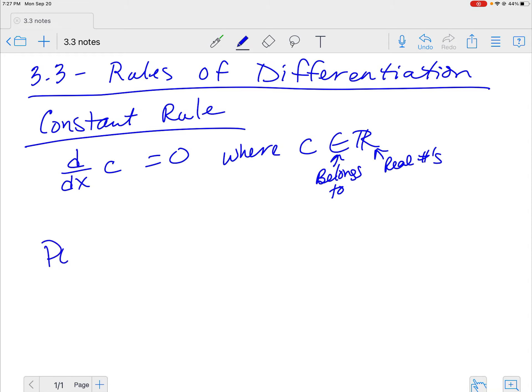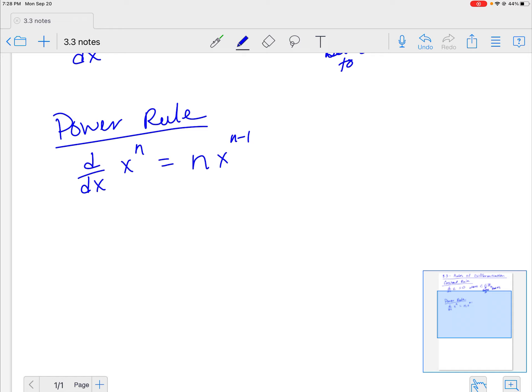Here's the next one, power rule. If I take the derivative with respect to x of x to the n, you're going to bring the exponent in front and subtract one from it. That's the power rule. Anytime you have the variable to a numeric exponent, bring that number in front and subtract one from it.